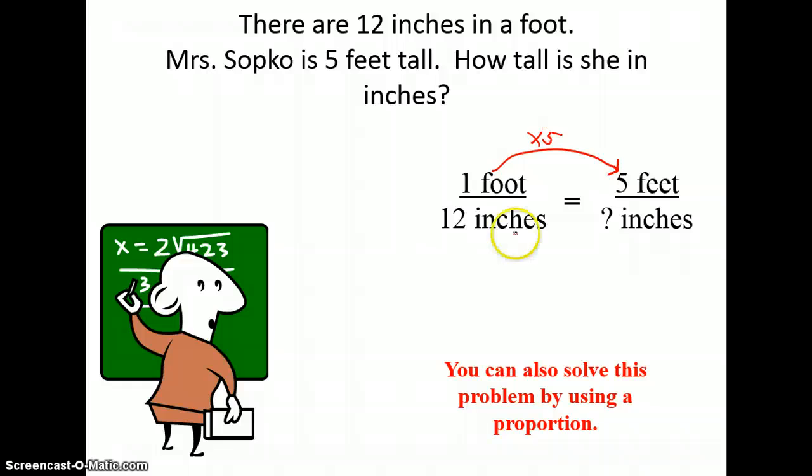So if I multiplied in the numerator, I must also multiply in the denominator. 1 times 5 is 5, 12 times 5 is 60 inches.